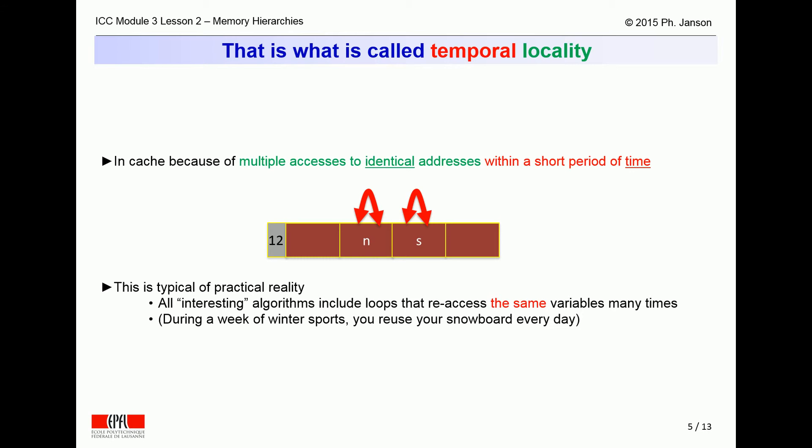Realistic programs always re-access many times the same variables, especially as they typically contain many loops. The same happens during a week of winter sports, where people reuse their snowboard every day, because every day resembles the other days, like a repeating loop.